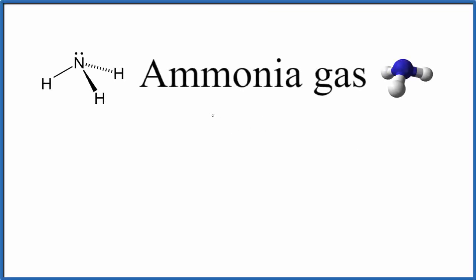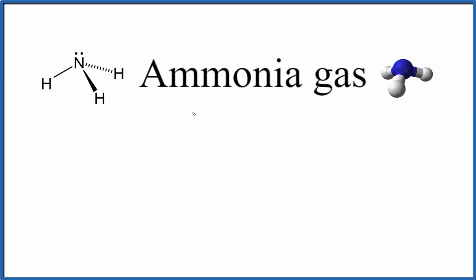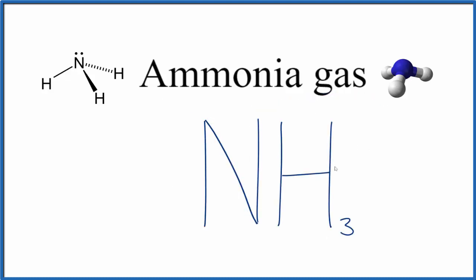In this video, we'll talk about the chemical formula for ammonia gas. Ammonia gas is one of those that you just need to memorize. When you hear ammonia, you should think NH3. This is the formula for ammonia gas, and you really can't figure it out just by looking at the name — you just need to memorize that ammonia is NH3.